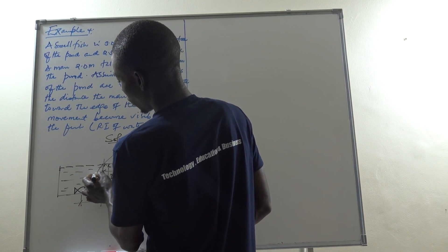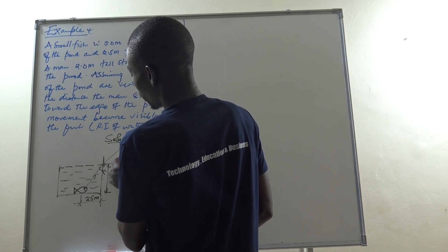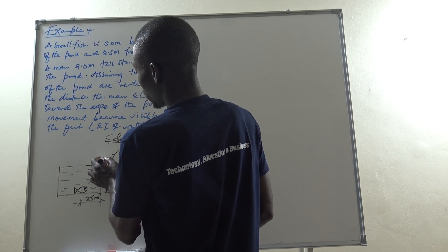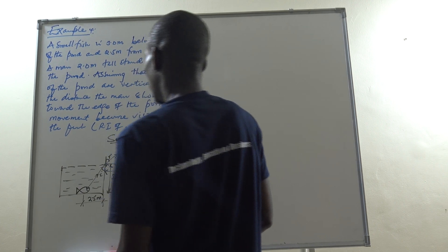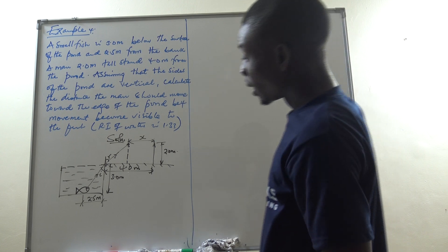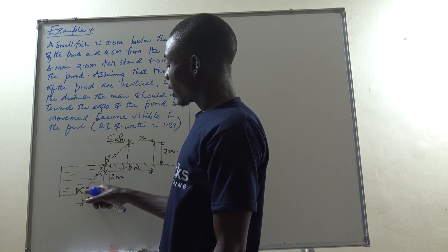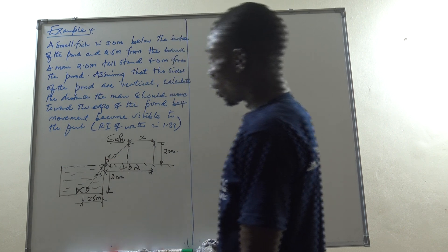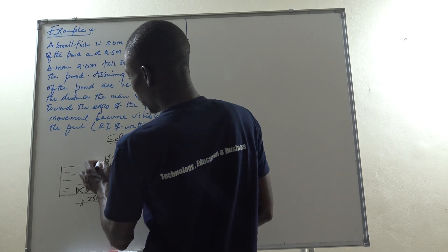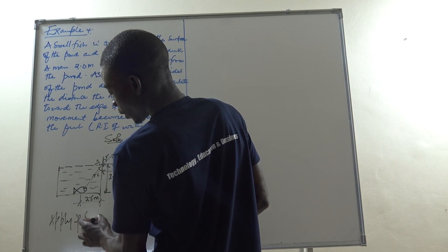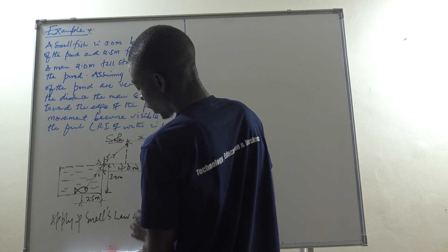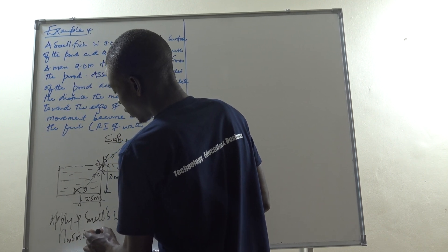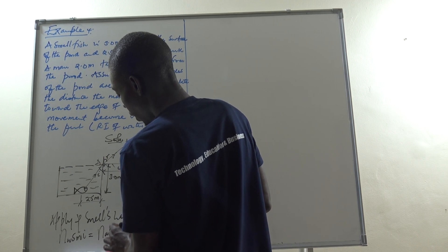When the man is at the critical position, light rays will travel from the fish upward, get refracted at the water surface, and reach the man's eyes. This is the ray diagram — if he's at this boundary position, the refracted light rays just reach his eyes. So he shouldn't go beyond this point. To solve this problem, I call the surface point A and apply Snell's Law at A: the refractive index of water times sine of angle i equals the refractive index of air times sine of angle r.